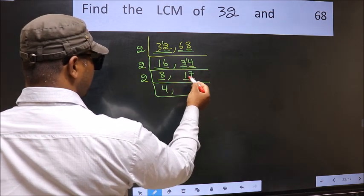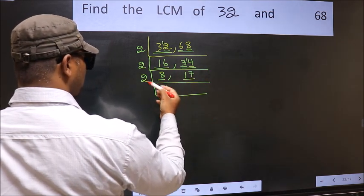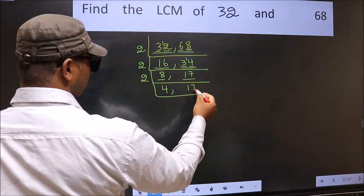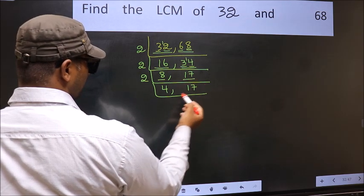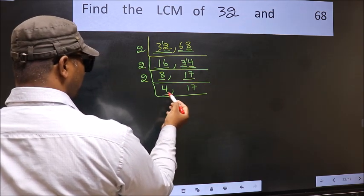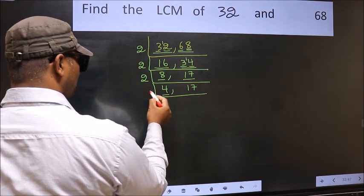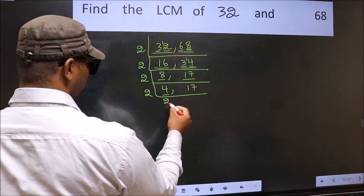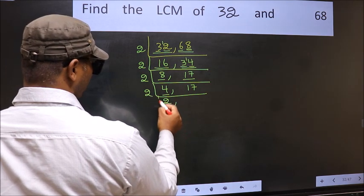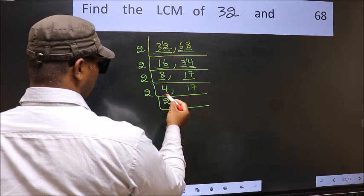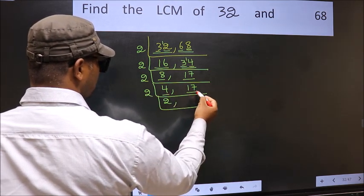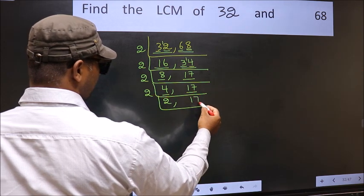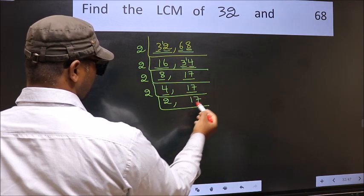The other number is 17, which is not divisible by 2, so we write it down as it is. Now here we have 4, and 2 times 2 is 4. The other number 17 is again not divisible by 2, so we write it down as it is.